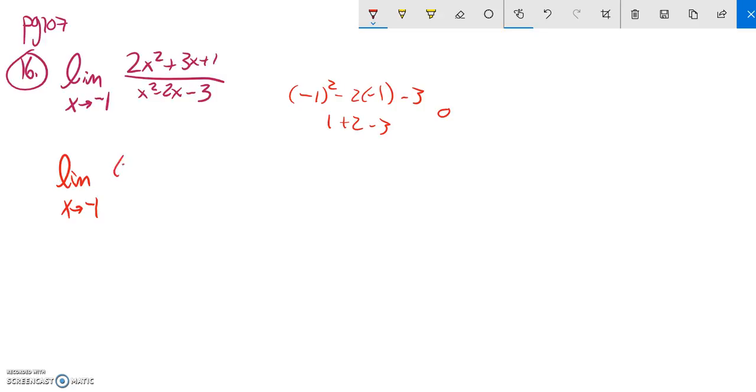So this numerator up here, that's going to factor into 2x plus 1 times x plus 1, that's good. And then this one factors to x minus 3 times x plus 1.